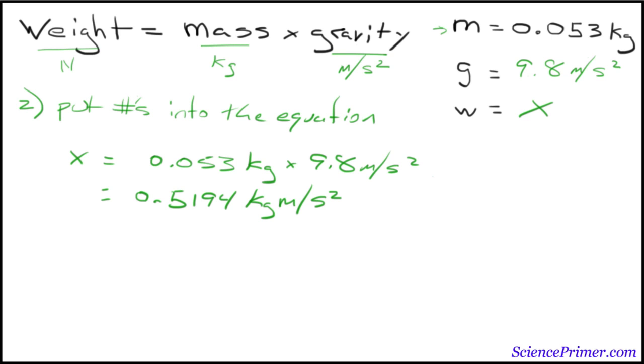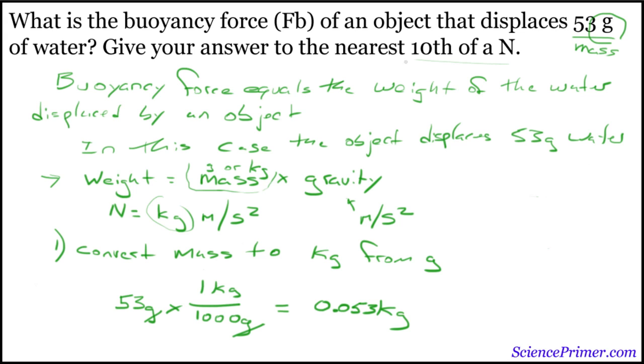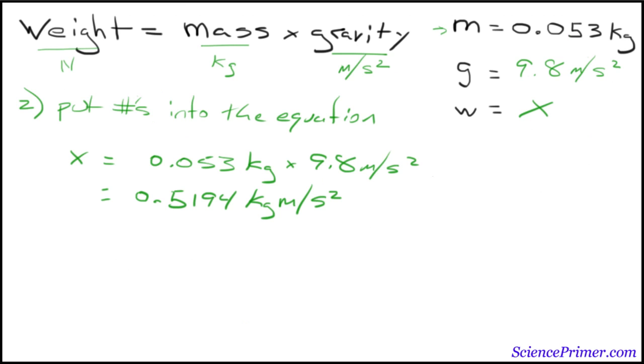Now, remember from the previous page, we need this in the nearest tenth of a newton. So, rather than have these four digits, we can break this down. Since this is less than 5, this rounds down to 0.5. So, we'll make it 0.5. And since we know that a newton equals a kilogram meter per second squared, we can go ahead and change this to newton. And we have our answer.